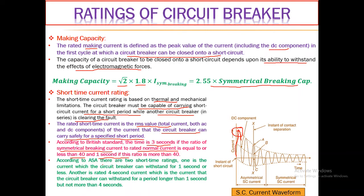According to American Standard there are two specific time ratings: one is the current the circuit breaker can withstand for one second or less, and another is the rated four-second current — the current the circuit breaker can withstand for a period longer than one second but not more than four seconds. The British Standard suggests three seconds; the American Standard suggests one to four seconds.